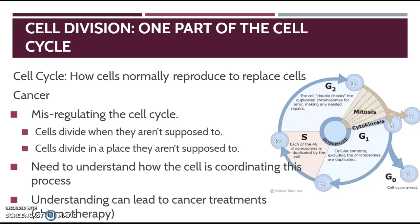Cells normally divide at certain times as part of being a living organism. But there are checkpoints within the cell that allow it to pass from stage to stage in the cell cycle. If the cell doesn't have everything right in those different stages, it won't pass the checkpoint, and the cell will either stop dividing or receive signals to commit cell suicide through a process called apoptosis. But in cancer, cells divide when they're not supposed to or in a place they're not supposed to. Understanding how the cell coordinates this process can help us find cancer treatments like chemotherapy.